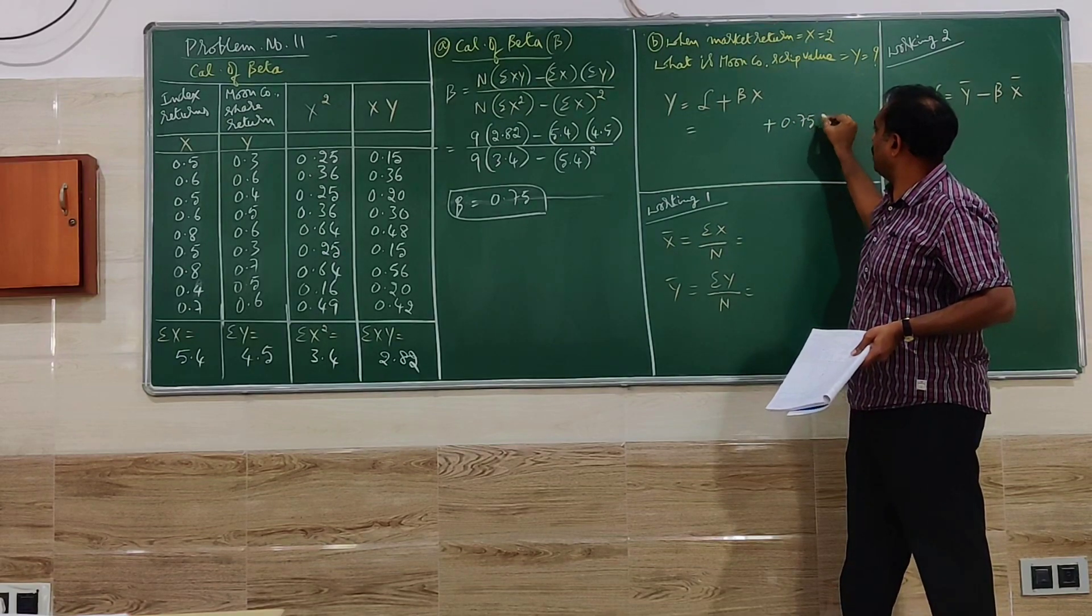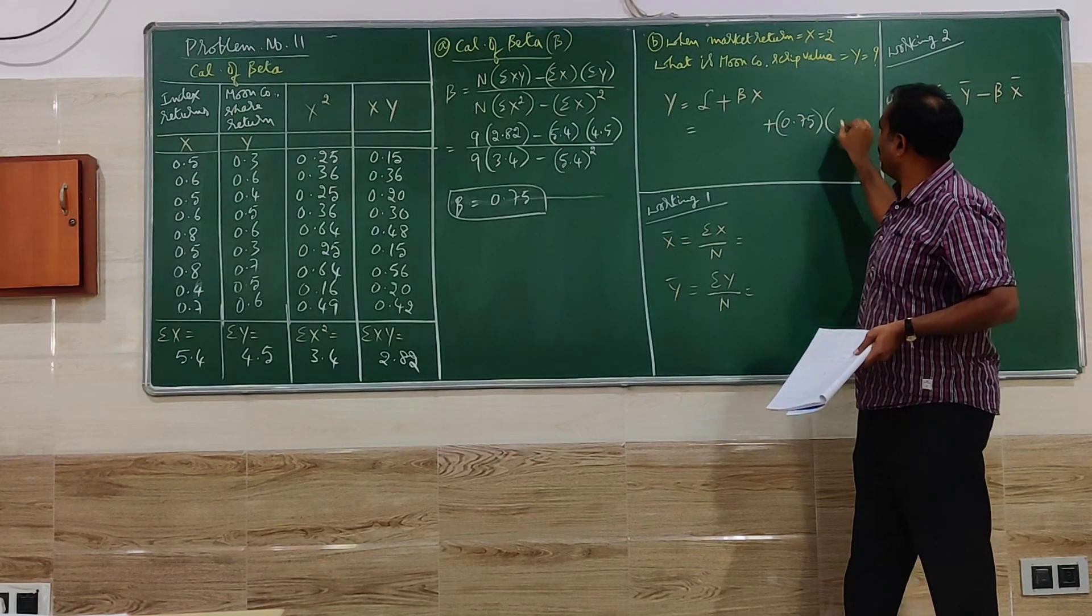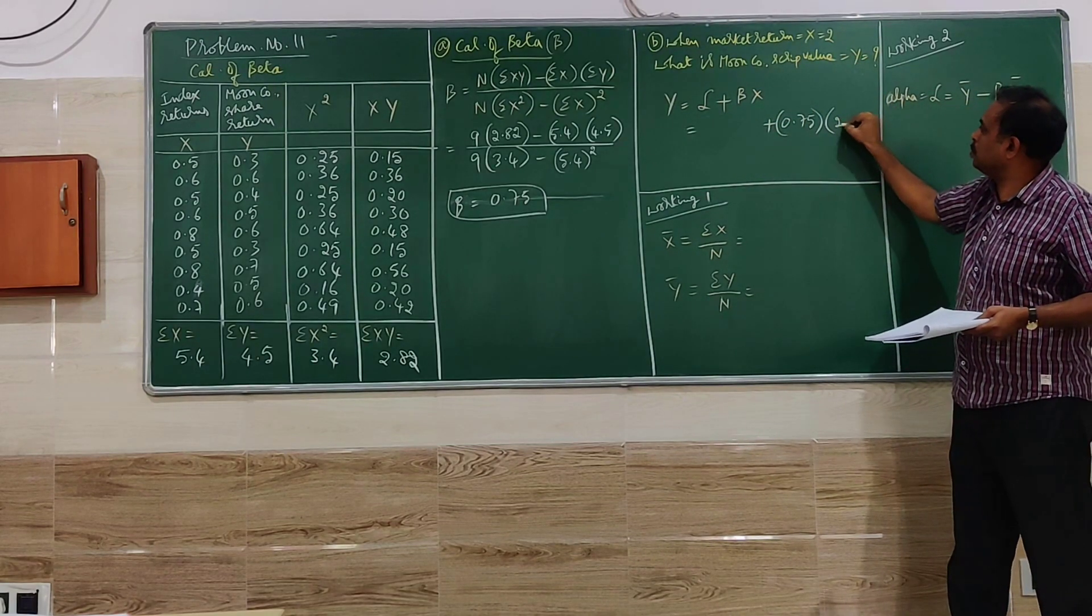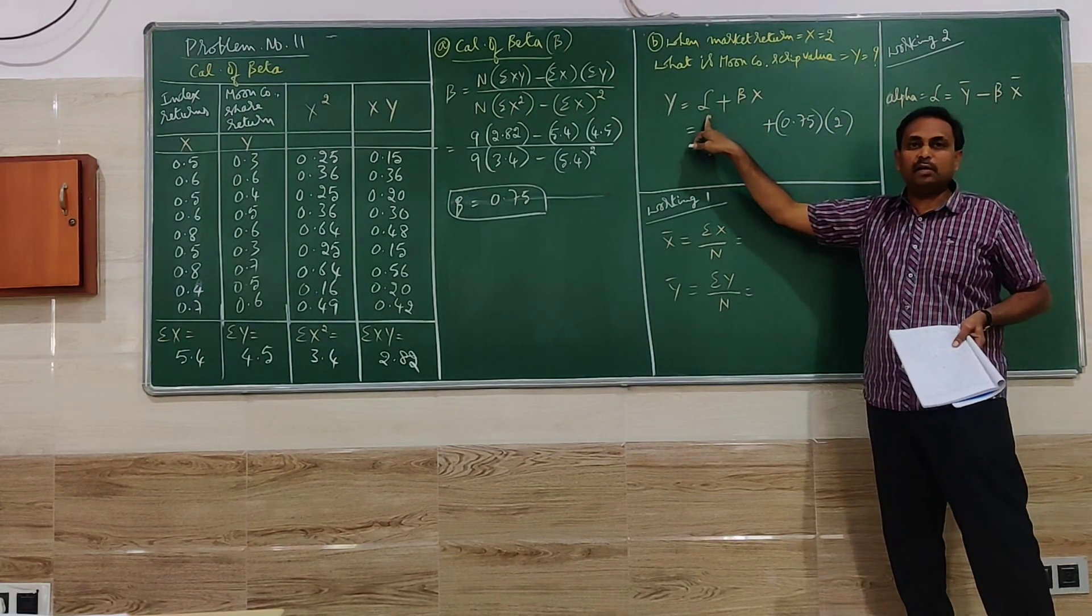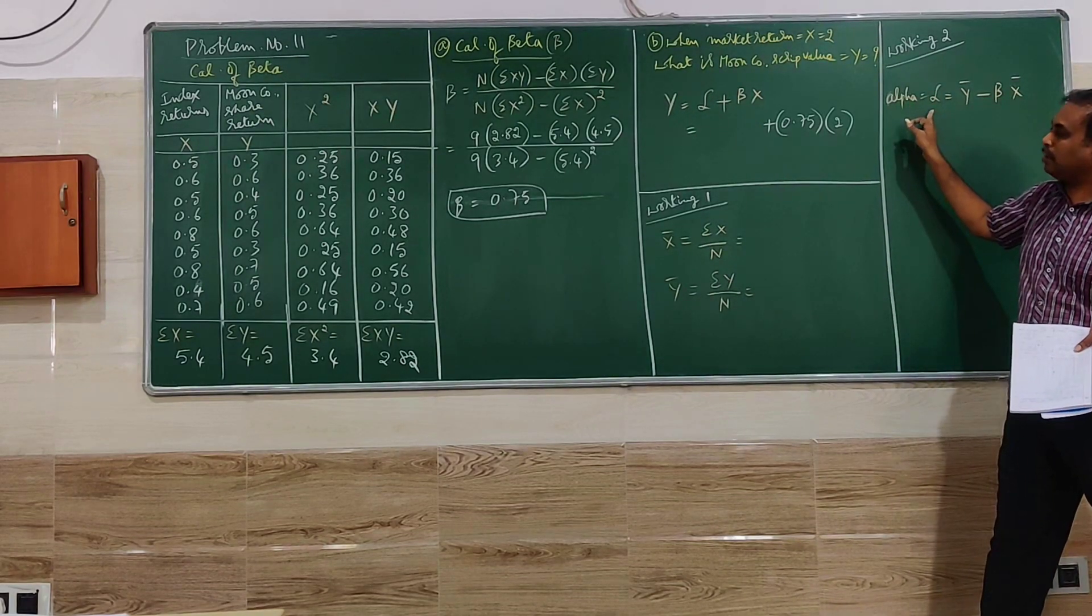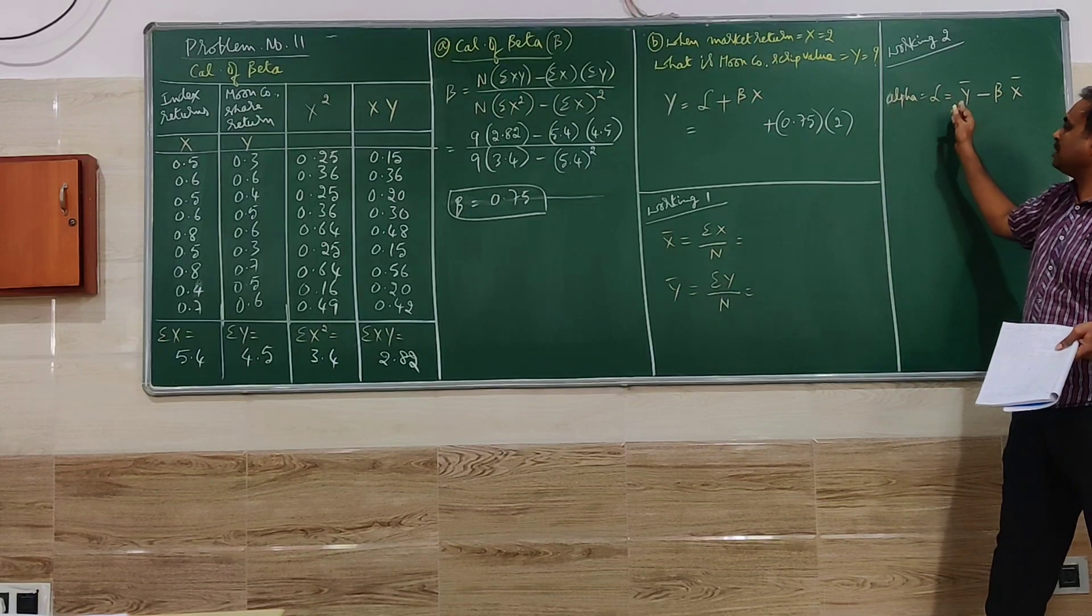Alpha is not known but beta is known here for us. Beta is 0.75. We also know X, X is 2. So we have to go for calculation of alpha. To go for alpha we have to go for two calculations: first working and second working.